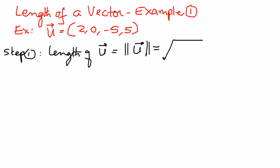We take the components and then raise them to the second power. 2 squared plus 0 squared plus negative 5 raised to the power of 2, plus 5 squared, like that.